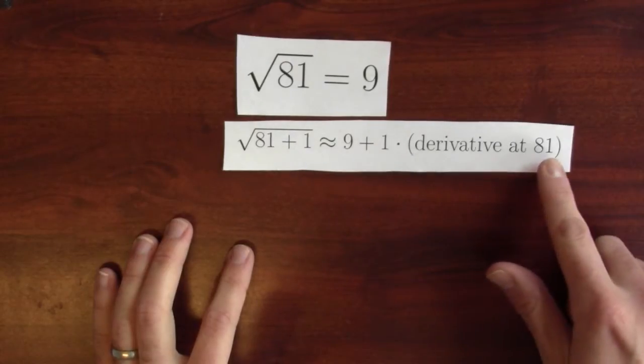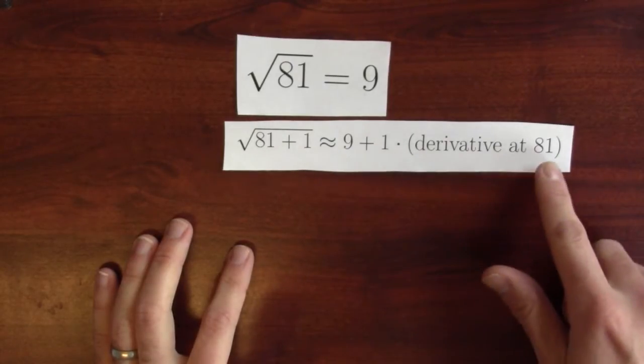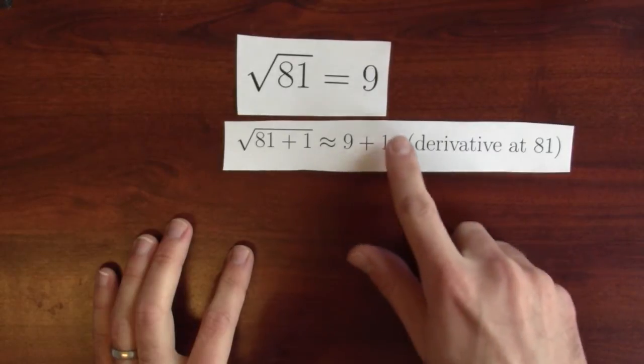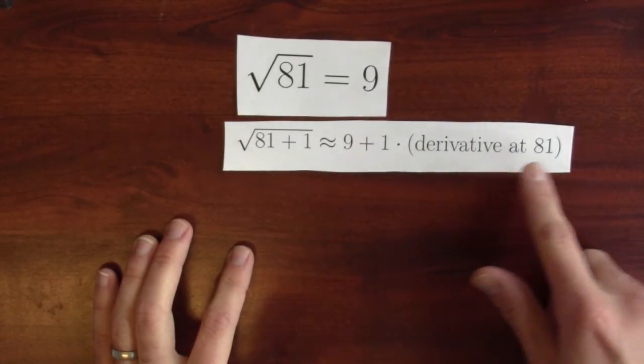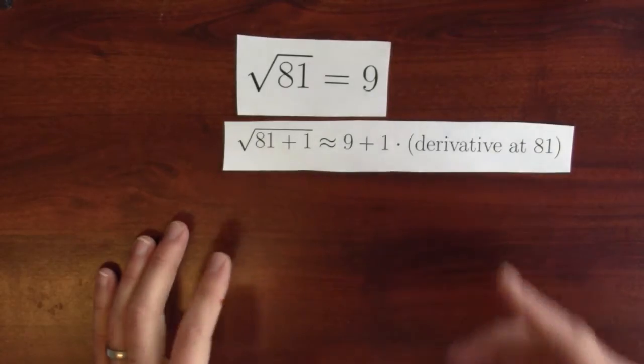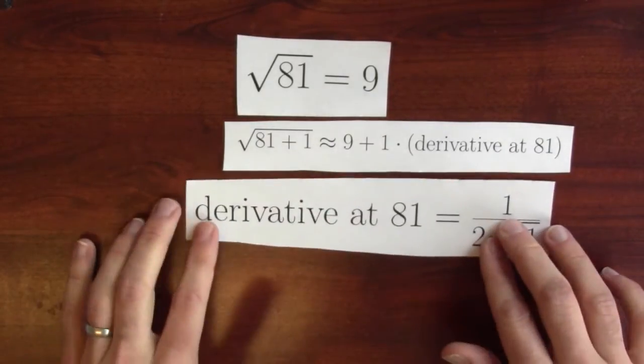So I'm going to take the derivative of this function at 81, of the square root function at 81. I'm going to multiply by how much I'm wiggling the input by. This will be how much I expect the output to change when I change the input. Now, in this specific case, what's the derivative at 81?